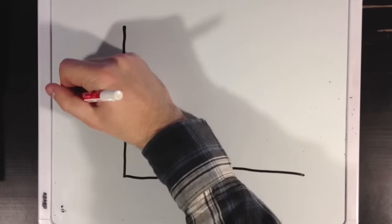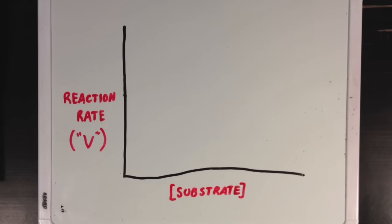If we were to look at a graph and plotted the reaction rate V versus our concentration of substrate, we would see that as our substrate concentration got really high, the rate would level off as it approached our Vmax value.